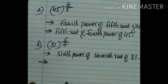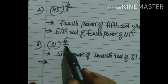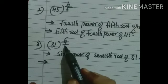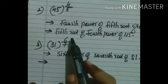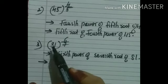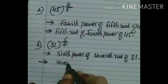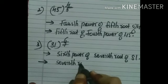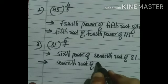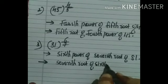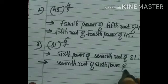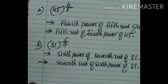Now we start the second meaning from the denominator. The denominator is the root. So we write: seventh root of the sixth power of 81. Seventh root of the sixth power of 81. This is how we write it.